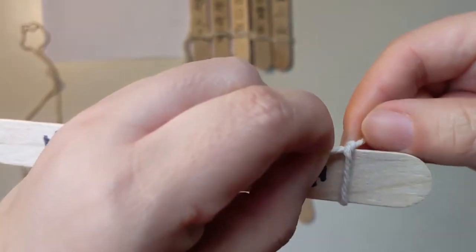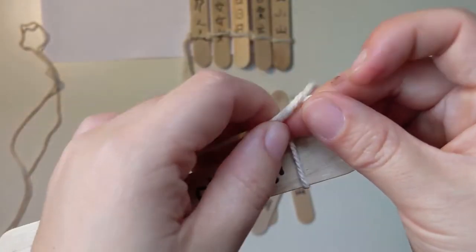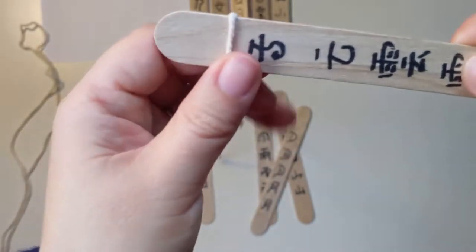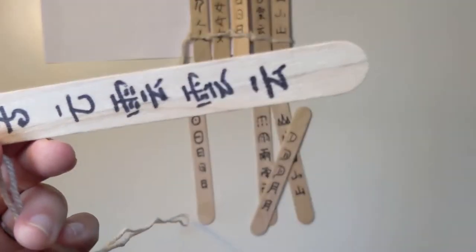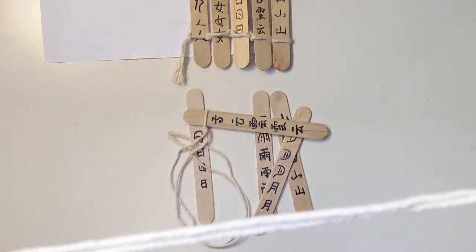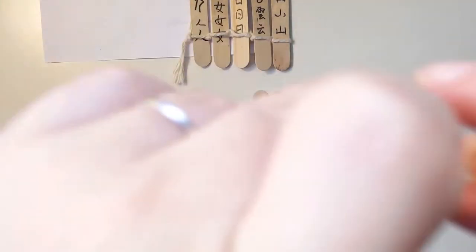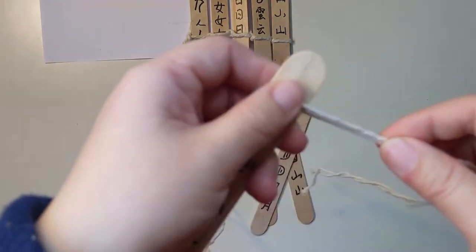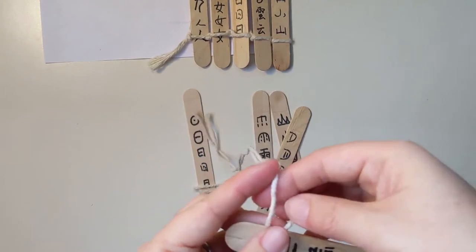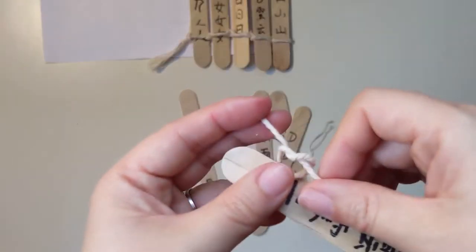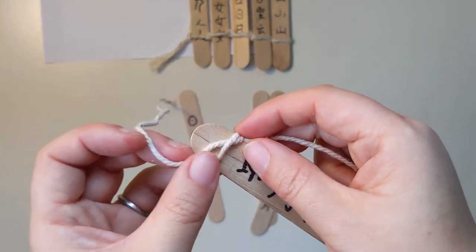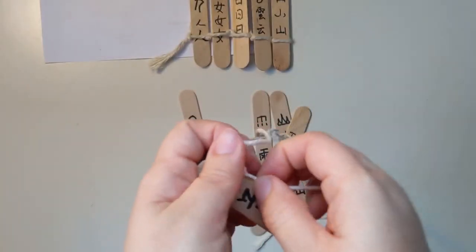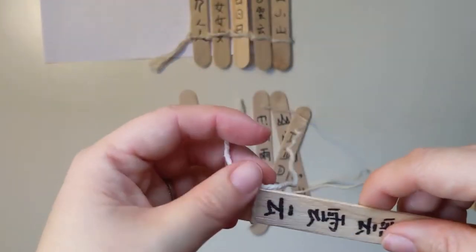To secure my string, I have to double knot. I tie another knot over my first one. On the other edge of my slats, I do the same thing. I fold my string into half, I slide the end into my string, and I tie a knot first along my pencil line. To secure my string, I have to double knot.